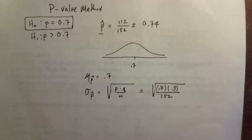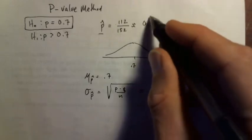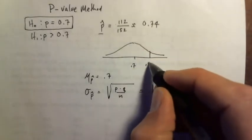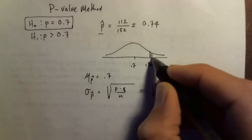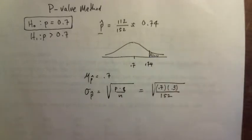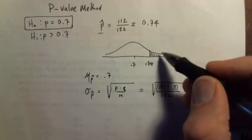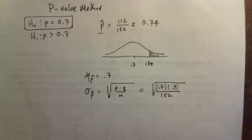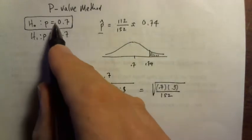So that is our distribution, and what we will do is we're going to look at this result that we got, 0.74, and we are going to determine how unusual that result is. If the area out here is too big, then that is not unusual enough for us to have proved that this is false.